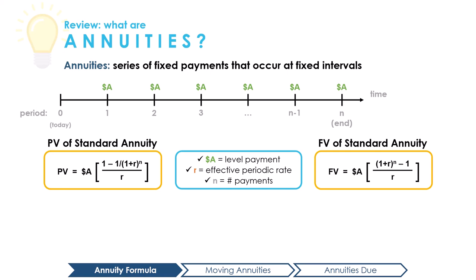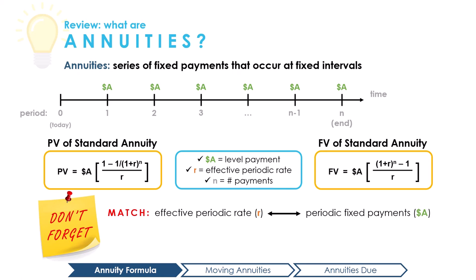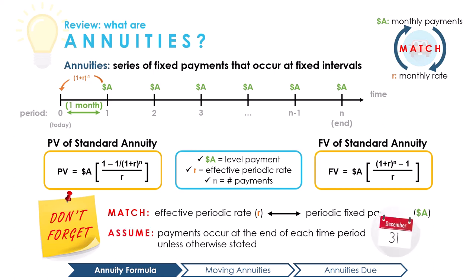The key here to remember is to always match the period of the interest rate, R, with the period of the fixed payments, A. For example, if you are making monthly insurance payments, then be sure to use the periodic monthly interest rate. Always assume that the payments occur at the end of each time period, unless otherwise specified.